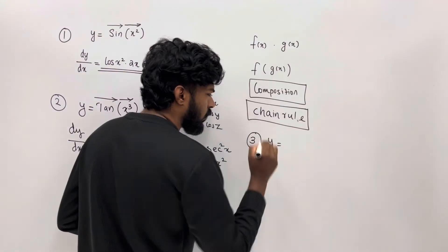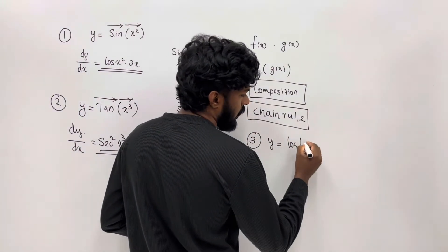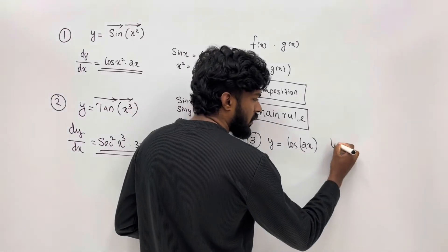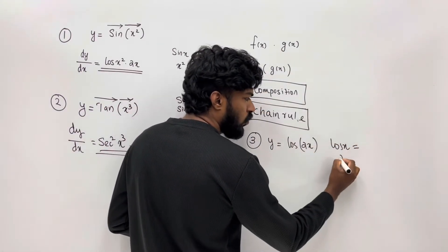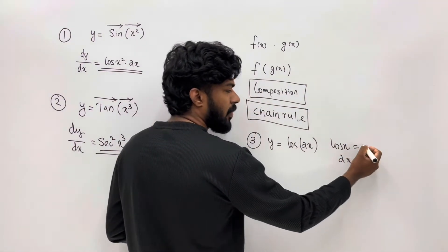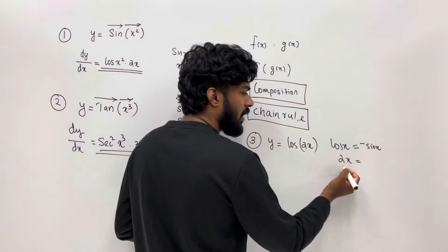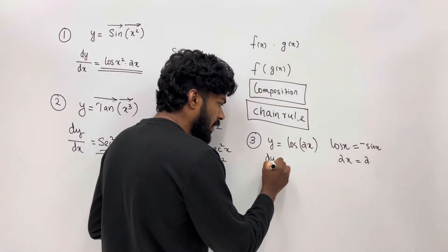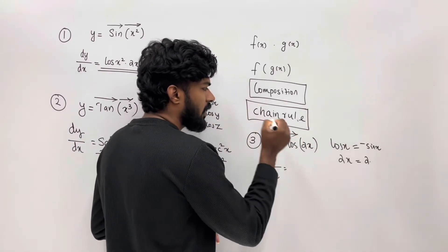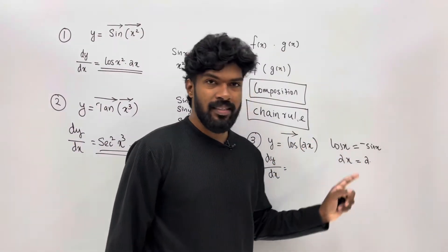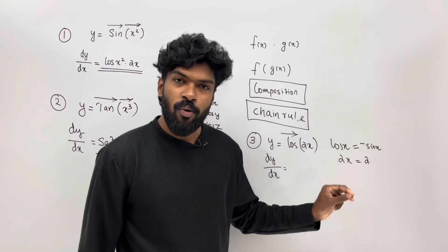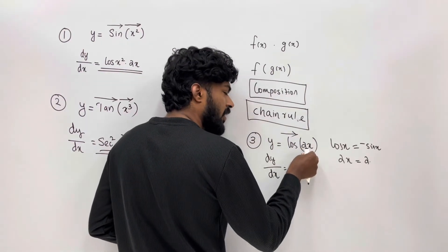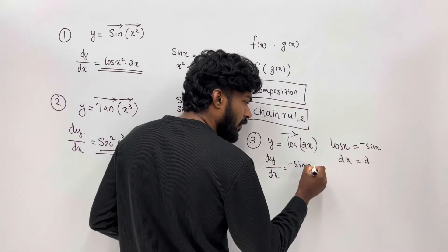Let's try the next example. y equals cos(2x). This is what we are going to do — the outer function is cos x and the inner function is 2x. The derivative of cos x is minus sin x. The derivative of 2x — what is the derivative?